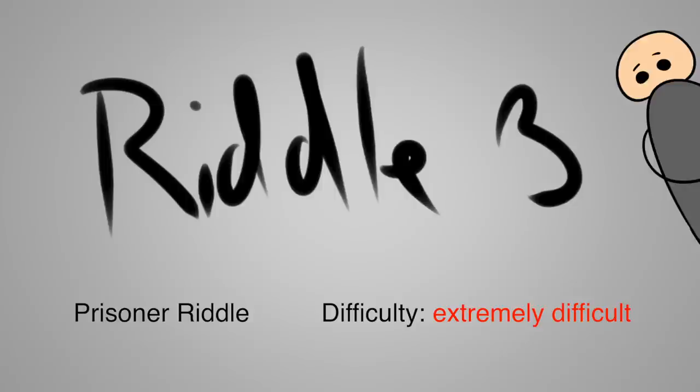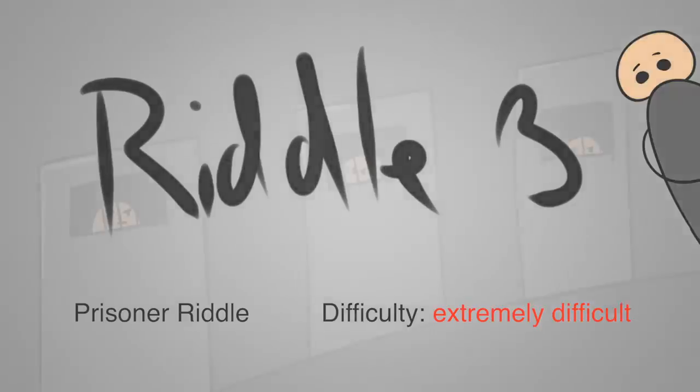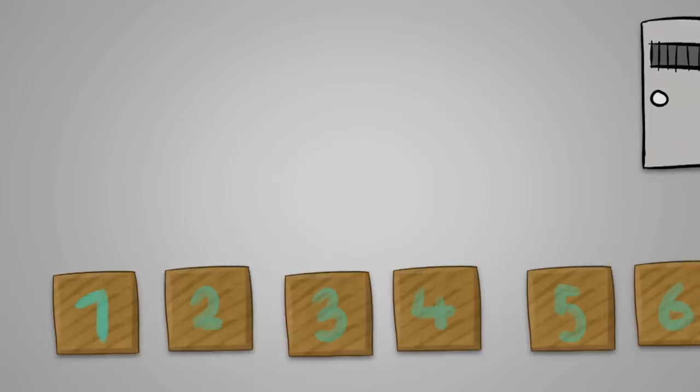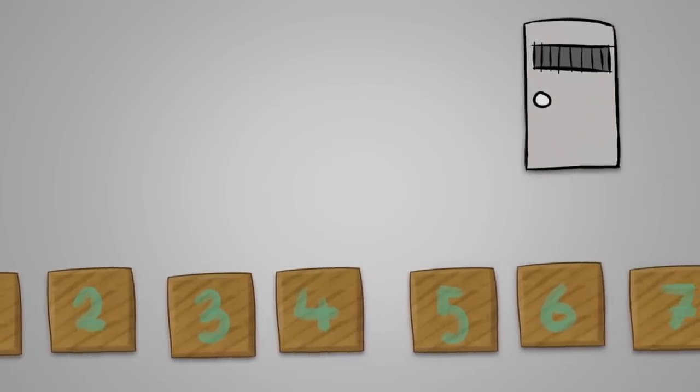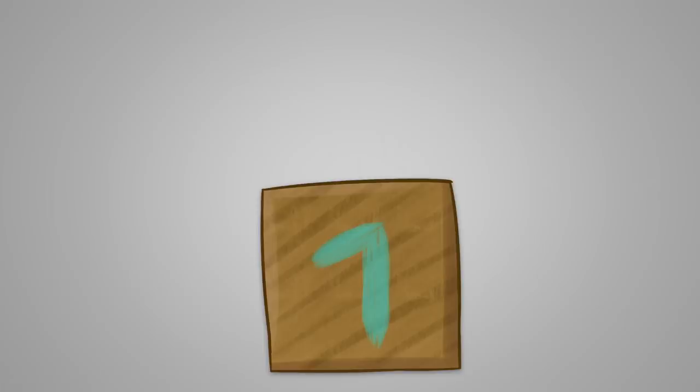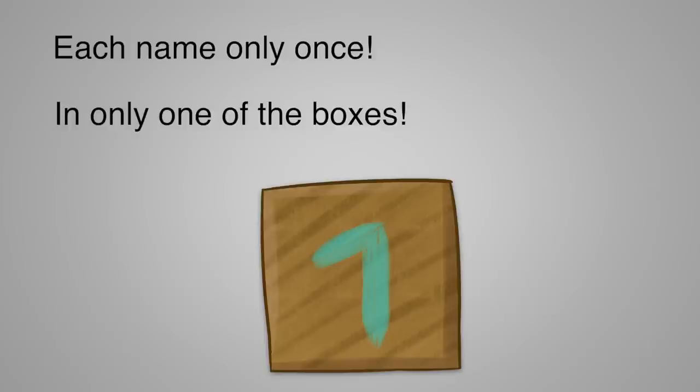The third riddle is one of my favorite and one of the most difficult logic riddles I know. 100 extremely intelligent prisoners are imprisoned in solitary cells. There is a room with 100 small boxes numbered and labeled from 1 to 100. Inside each of these boxes is a slip of paper with one of the prisoners' names on it.